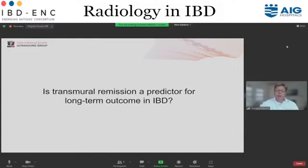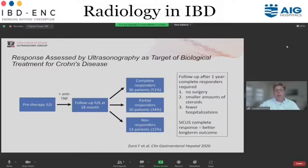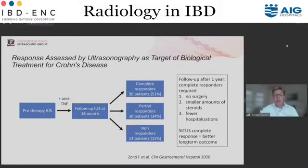Is transmural remission a predictor for long-term outcome in IBD? One Italian study from Rome performed a pre-therapy intestinal ultrasound, patients received anti-TNF therapy, and at 18 months another ultrasound was performed. Patients were grouped into complete responders — meaning complete transmural remission — partial responders, and non-responders. One year later, complete responders had no surgery, small amounts of steroids, and fewer hospitalizations, suggesting that complete transmural remission is associated with a better long-term outcome.